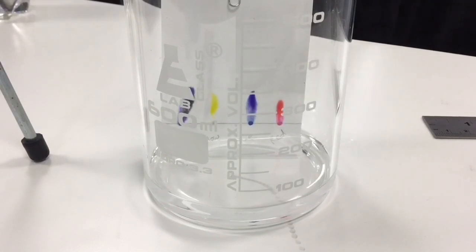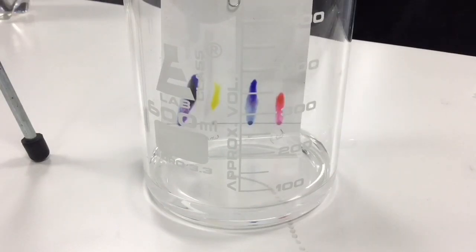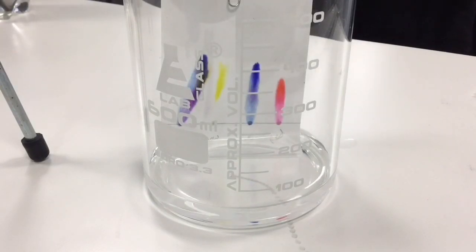Once the paper is placed into the solvent chromatography will begin. It is vital that the solvent does not pass the point at which the inks were placed on the origin line as at this point the solvent would dissolve any of the soluble inks that were on the line.